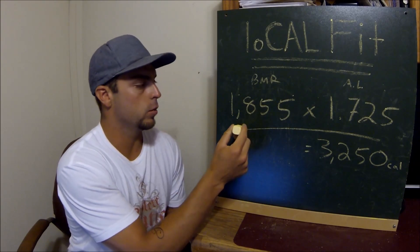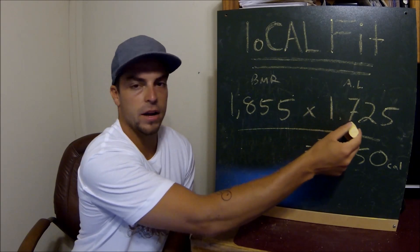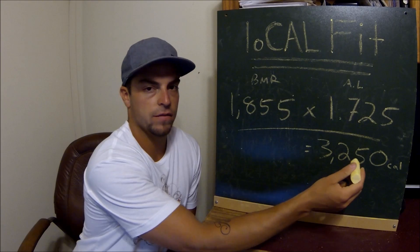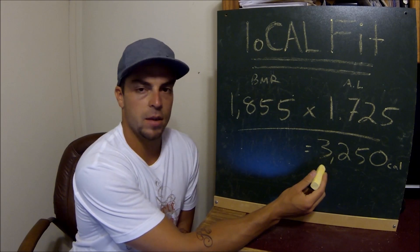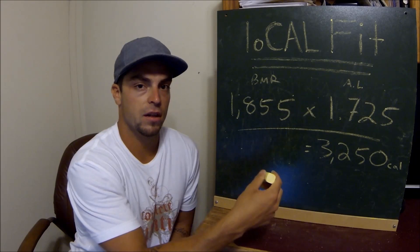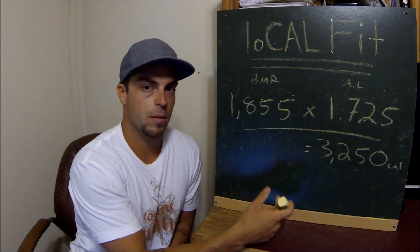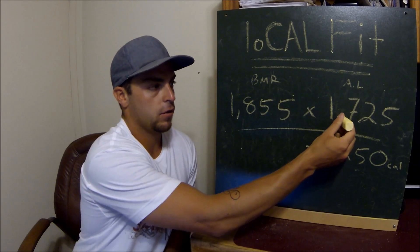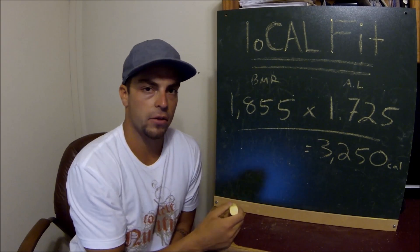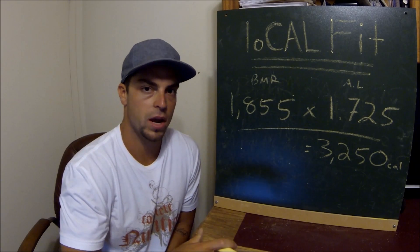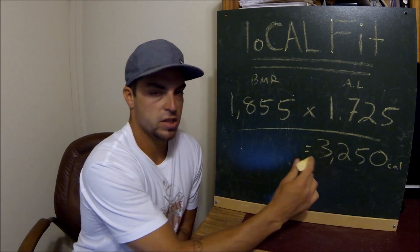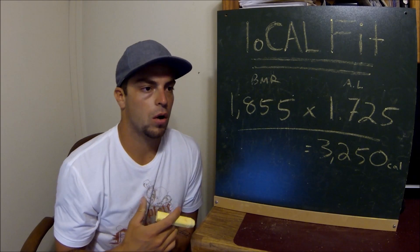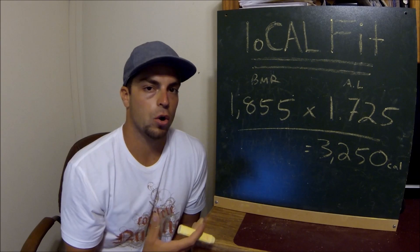So now we have our BMR multiplied by our activity level. That gives me 3,250 calories — this is basically the amount of calories I need, given my activity level, just to maintain my weight. At this level of activity, if I eat 3,250 calories I would just maintain; I wouldn't lose weight, I wouldn't gain weight.